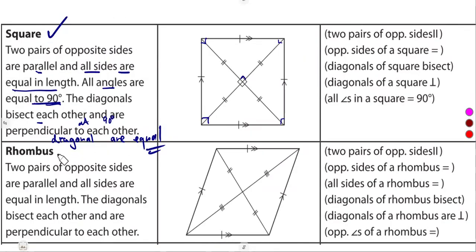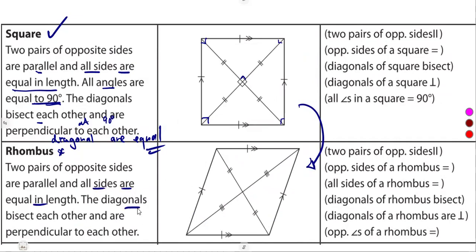A rhombus is also one of the parallelograms, just like a square. It has two pairs of opposite parallel sides, and all sides are equal in length. The diagonals bisect each other and are perpendicular to each other at 90 degrees — just like on a square. So this is just a recap.